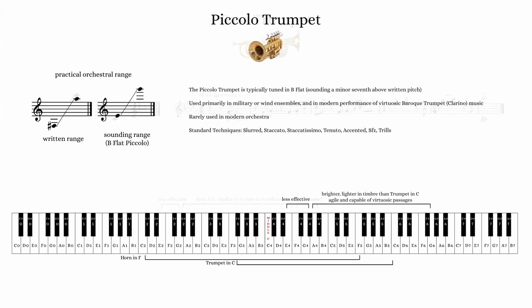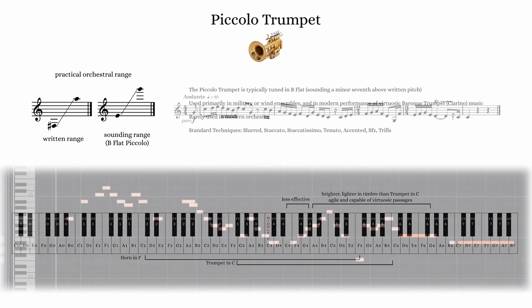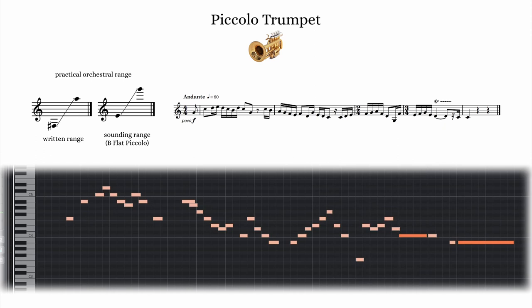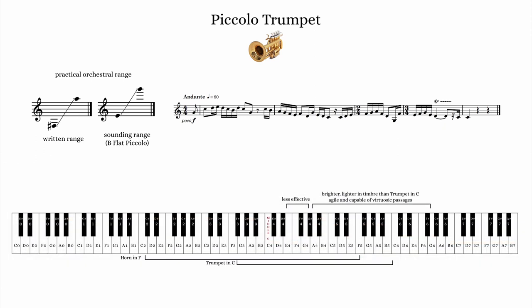The final member of the trumpet family is the piccolo trumpet, commonly tuned in B-flat, sounding a minor seventh above written pitch. It is often used by modern players to play the virtuosic Baroque clarino music, as the agility required of the upper register is more easily attained on this instrument than on the C trumpet. The piccolo trumpet has a bright and somewhat metallic timbre and is capable of the same standard and extended playing techniques as the trumpet in C. Unfortunately, it is yet another instrument that is rarely found in the modern orchestra.